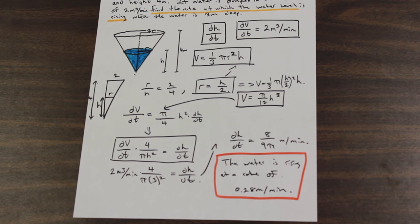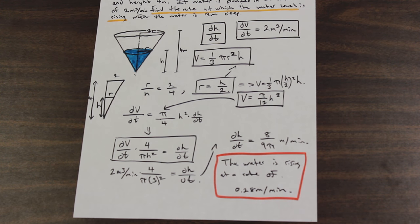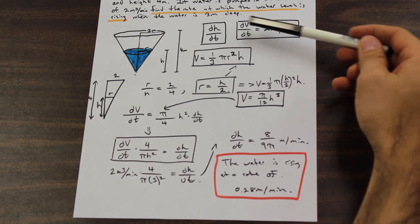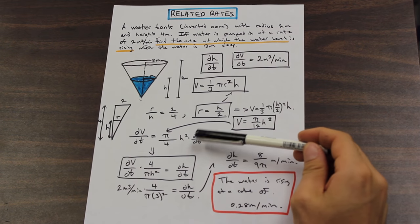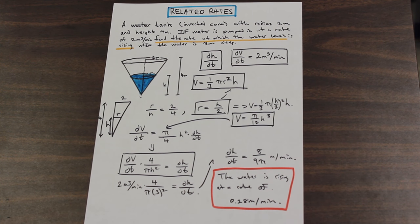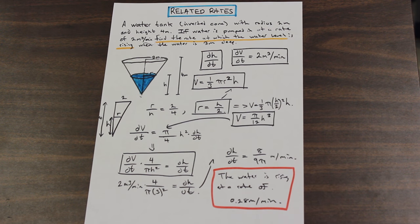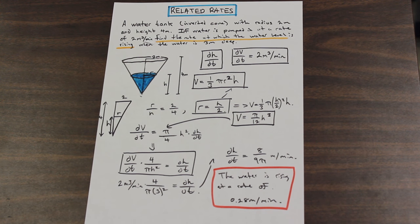I hope that helped, guys. I wanted to go slowly and explain each step because these kinds of questions require you to really understand what taking a derivative means. You need to use similar triangles to eliminate a variable, then implicitly differentiate to create the term DH/DT. Identify what you need, identify what you're given, and follow these steps — almost all related rates questions follow a very similar pattern. Thanks for watching; like and subscribe if you enjoyed the video.